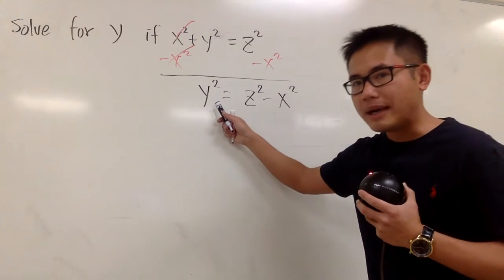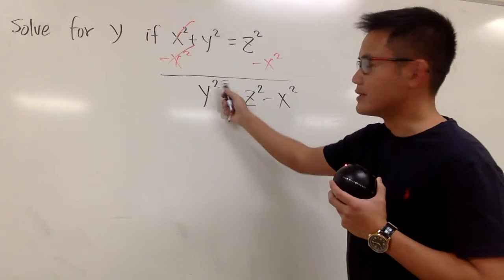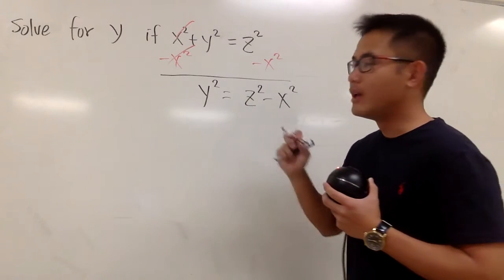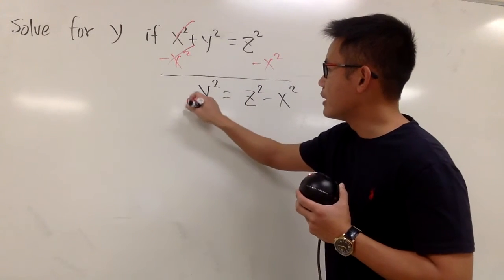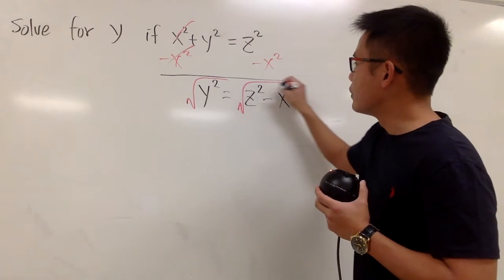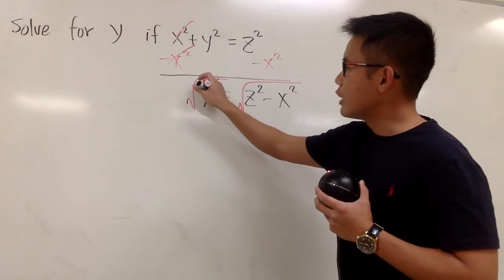I want to get y by itself, but this is really y to the second power, so what should we do? Remember, to get rid of the square, we can just take the square root on both sides, so that this and that will be canceled.